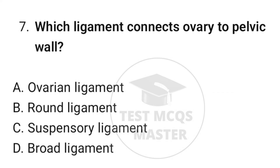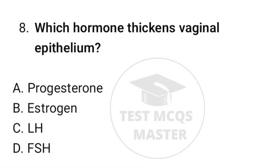Question number seven: which ligament connects the ovary to the pelvic wall? The correct option is C, suspensory ligament. Question number eight: which hormone thickens vaginal epithelium? The correct option is B, estrogen.